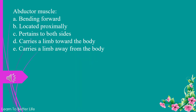Abductor muscle. a. bending forward. b. located proximally. c. pertains to both sides. d. carries a limb toward the body. e. carries a limb away from the body. The answer is e. carries a limb away from the body.